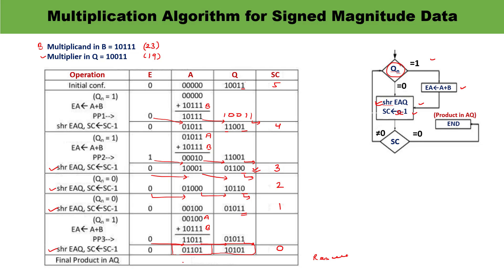The result is stored in AQ: 0110110101. Converting to decimal gives 437 — the same value we discussed — which is the product of 23 and 19. This is how the multiplication operation is performed. I hope with the help of this example it is now clear to you.